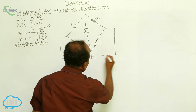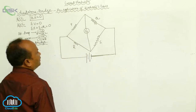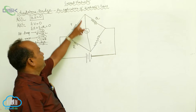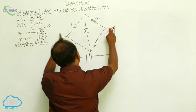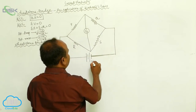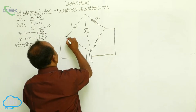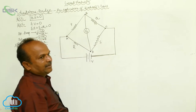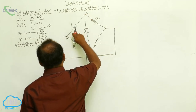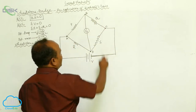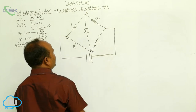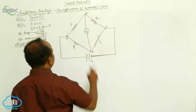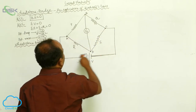The quadrilateral is labeled A, B, C, D. On side AB, resistance P is connected. On side BC, resistance Q is connected. On side CD, resistance S is connected. On side DA, resistance R is connected. Between opposite corners B and D, a galvanometer is connected. Between the remaining opposite corners A and C, a battery V is connected.